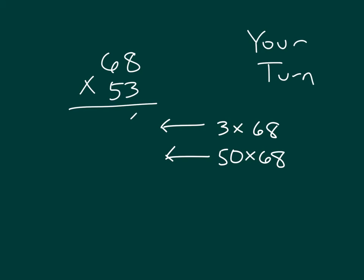3 times 8 to start with. It gives us 24 for a regroup of 2. 3 times 6 is 18, plus 2 is 20. Cross out the regroup. Working with this 5, which is 5 tens, that's why we place a 0.